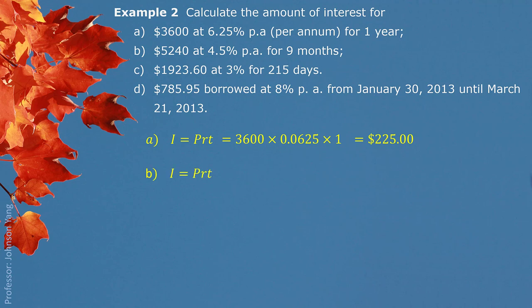Part B: $5,240 at 4.5% annual interest rate for 9 months. We put in $5,240 as principal and 0.045 as the annual interest rate. For the time period, we need to switch 9 months to years: 9 divided by 12, since 1 year has 12 months. Finishing this calculation gives us $176.85.